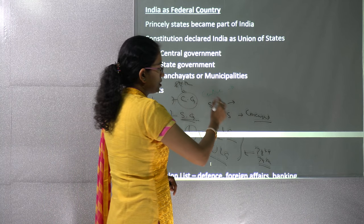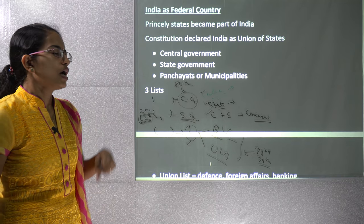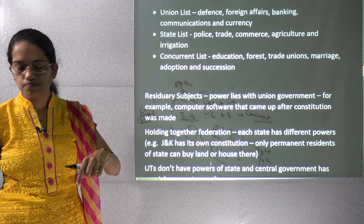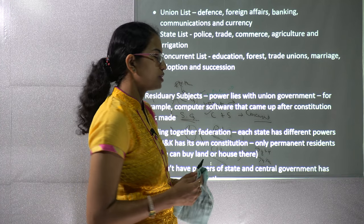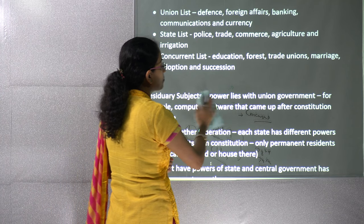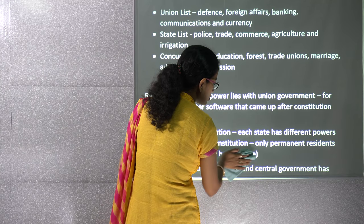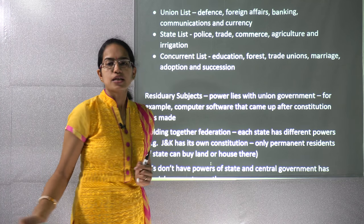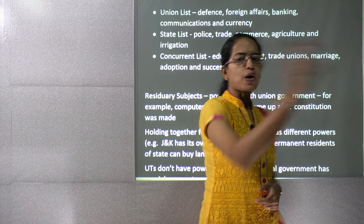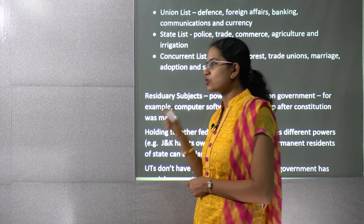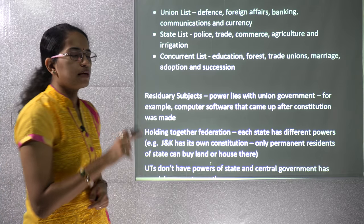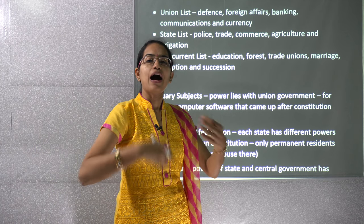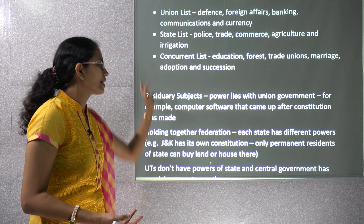When the division of powers between the center, state, and concurrent list was done, certain subjects came up later that were not anticipated. For example, computer software was neither part of the central nor state government's purview because it wasn't a concept when the constitution was written. Such subjects are placed into residuary powers, which are governed only by the center — the union government.